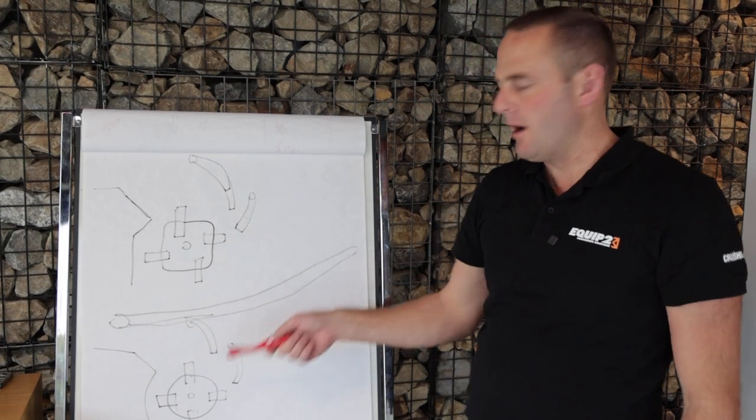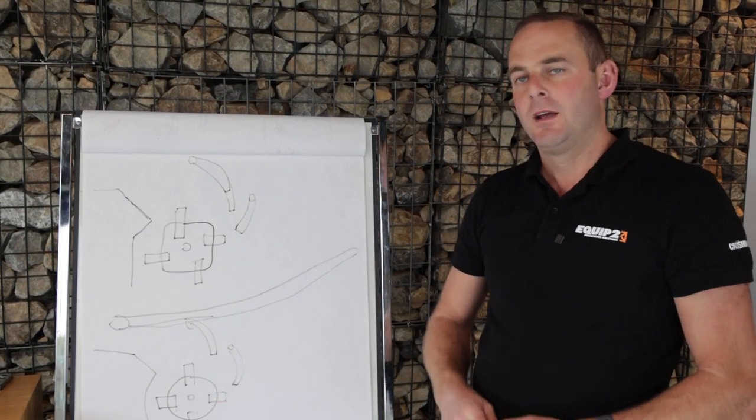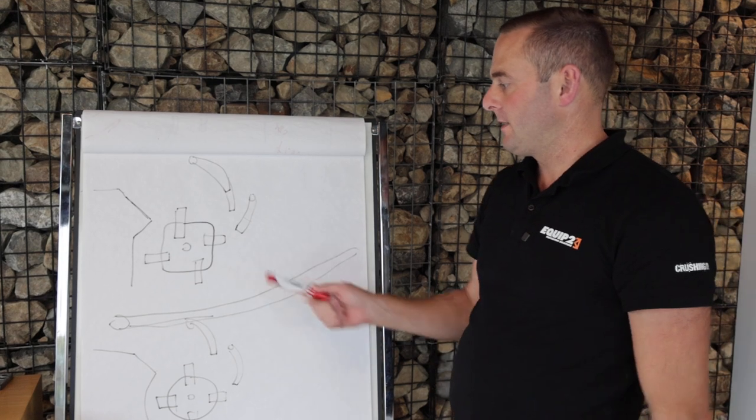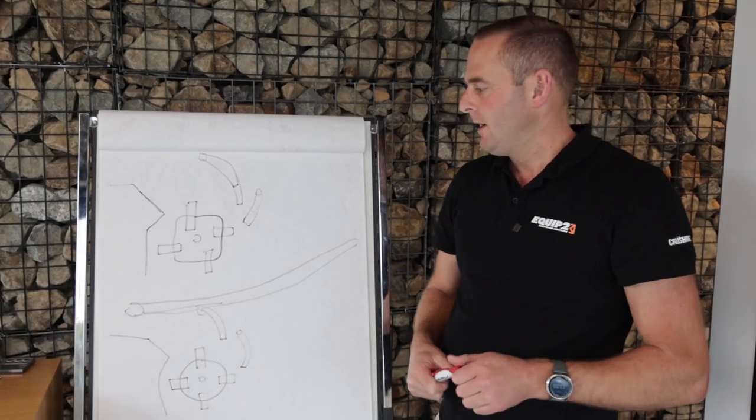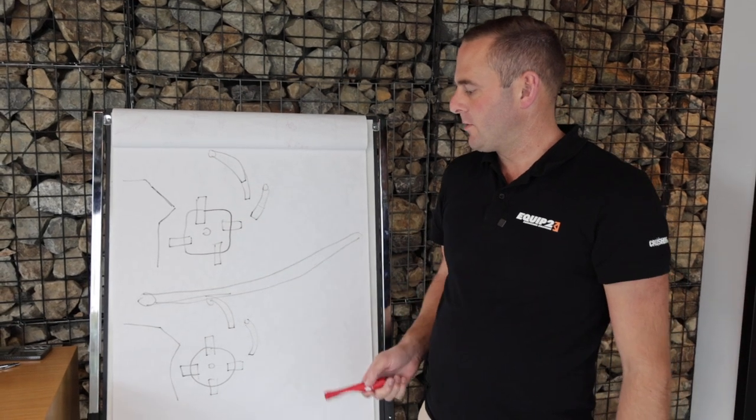Why do we prefer a square rotor over a round rotor? Interesting points which we picked up from our learnings here at Equip2 is the Keystrak builds a square rotor.